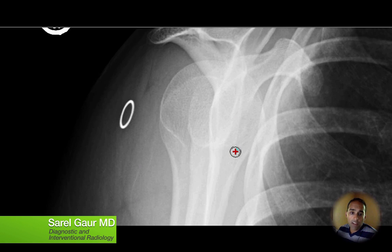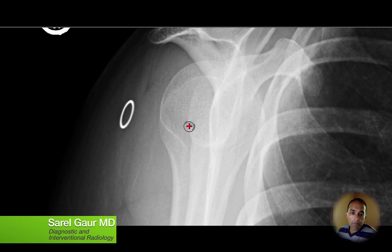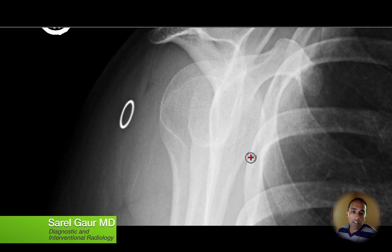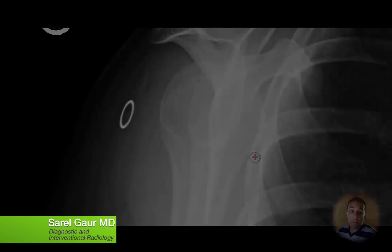That oval structure is actually the glenoid, being viewed en face — basically staring straight at it like a bull's-eye. And I can see the humeral head is completely overlying that glenoid. So this is again further proof that the humeral head is in direct contact with the glenoid, and I can confirm there is no dislocation of the humeral head. There is an anatomic glenohumeral position.